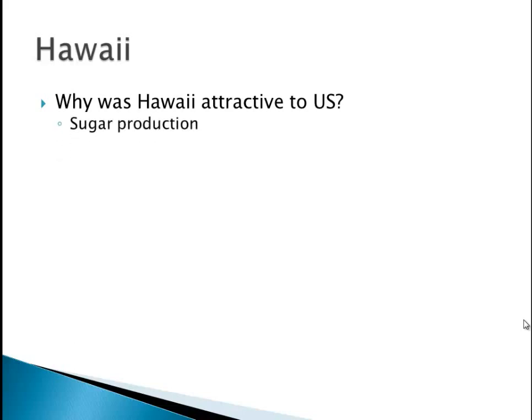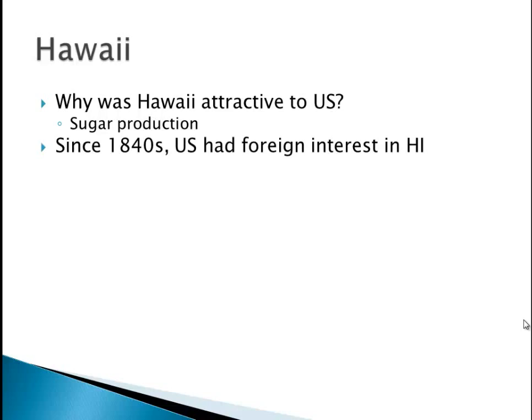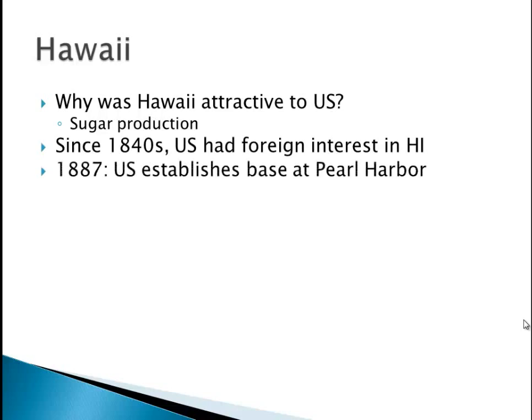They had many sugar plantations and lots of sugar was being produced. Keep in mind at this time, Hawaii is its own independent country. Since the 1840s the U.S. had a foreign interest in Hawaii with lots of trading. In 1887, the U.S. established a base at Pearl Harbor, which is still there today. The U.S. was heavily interested in annexing Hawaii — one reason being there were tariffs on sugar, and if you annex Hawaii, this is now part of the United States, so bye-bye tariffs.